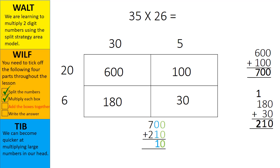I can now add the hundreds place. 700 plus 200. This equals 900. Now I have added all the boxes together. I can tick off stage 3 from our checklist.